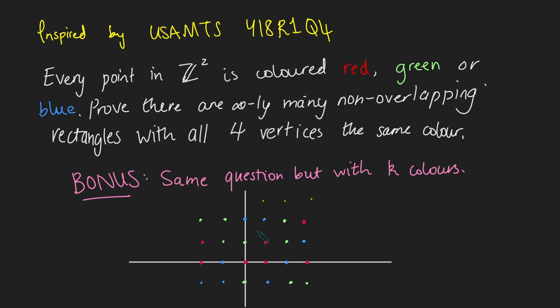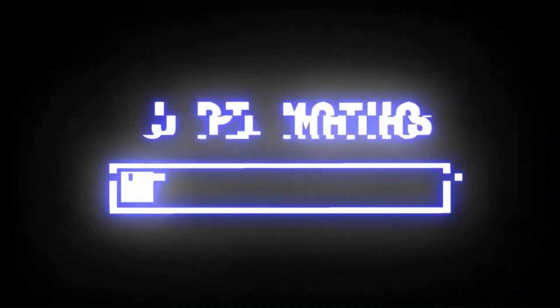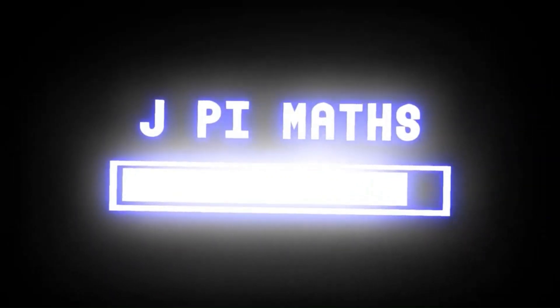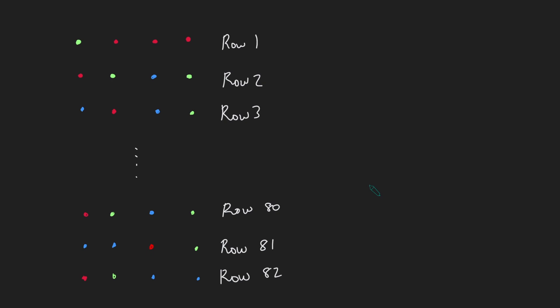If you want to have a go at this problem, pause the video now. I'm going to dive into a solution using the pigeonhole principle. I'll start by taking a 4 by 82 collection of dots — 82 rows with four points each. These can be anywhere on the plane, coloured however they already are. I'll show there's at least one rectangle in this collection, and since there are infinitely many non-overlapping 4 by 82 collections, there must be infinitely many such rectangles.